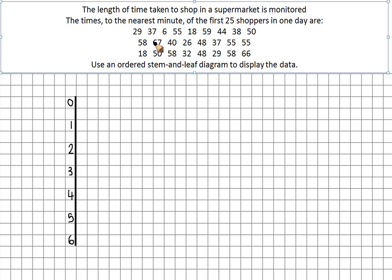Let's have a look now at putting the data on. So 29 is two tens and nine units, so we need to put that nine in there. 37 is three tens and seven units. Six is no tens and six units. 55, five tens, five units. So there's all the data put in.